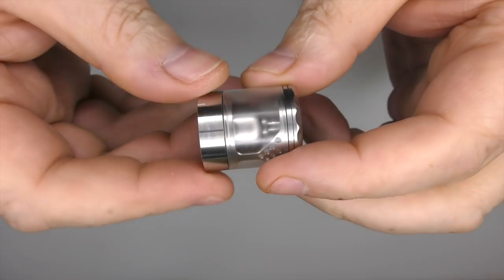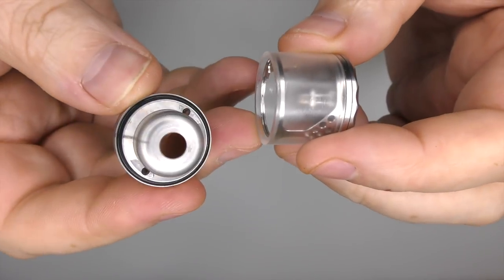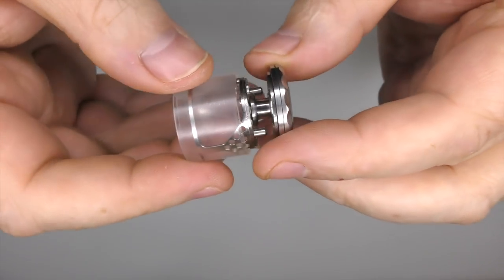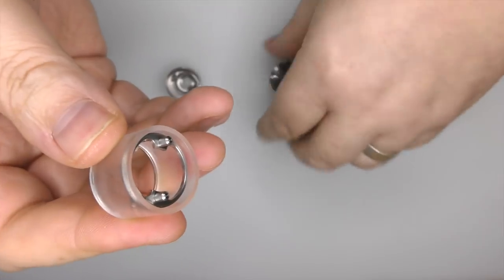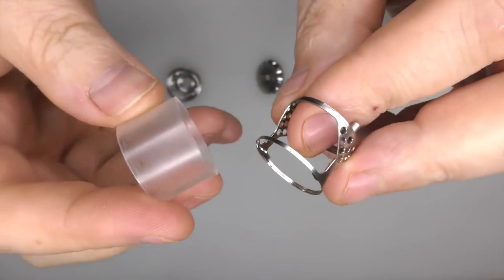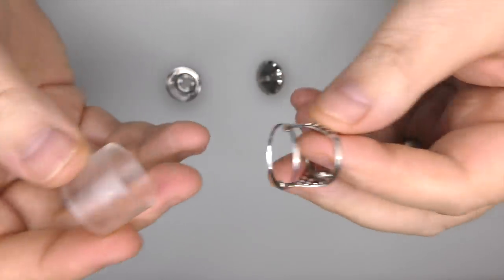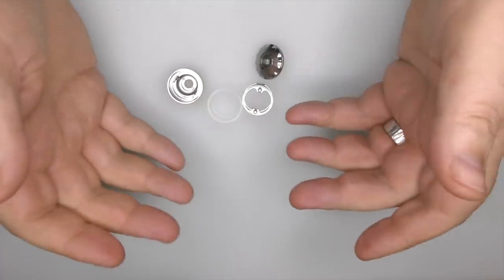And that nut will eventually fall out like that. There we go. And then I can take everything to bits. That'll come off, and this comes out like that as well. So there we go. That's the tank. Split right down, and you can get in there and clean everything.